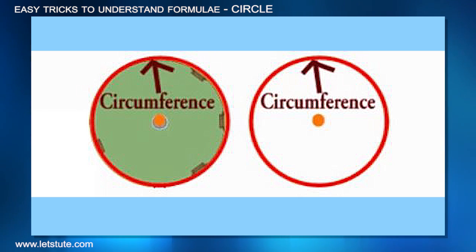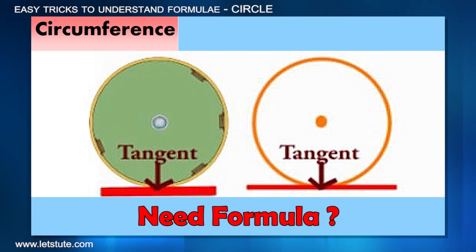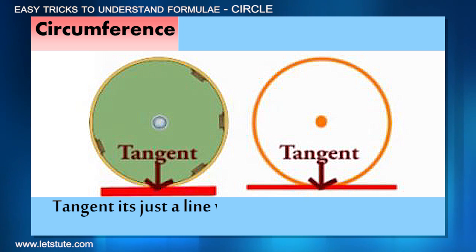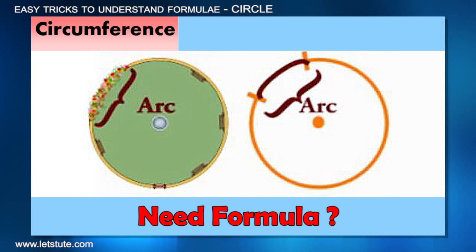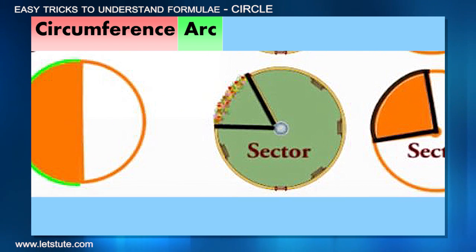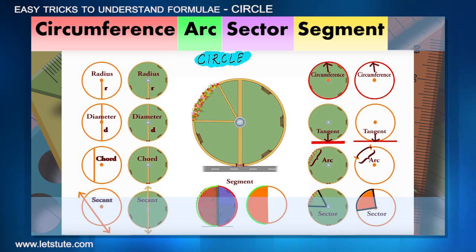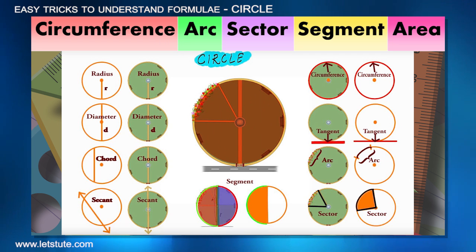Next is circumference. Yes, this looks like it might need a formula to find. Tangent—will we need a formula? No, because by its definition, tangent is just a line which touches at one and only one point of a circle. Arc requires a formula since it's a part of circumference. Sector and segment also require formulas. There's one more very important thing missing—can you figure it out? Yes, the area of a circle.